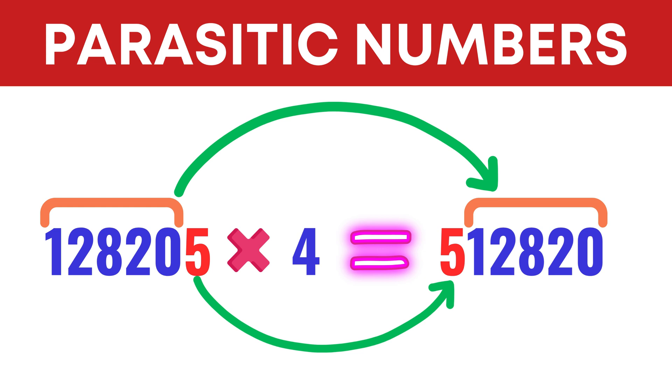A parasitic number is a natural number which when multiplied by a single-digit natural number results in movement of the last digit to its front. In other words, the decimal representation undergoes a right circular shift by one place. Take the number 179487 and multiply it by the number 4.